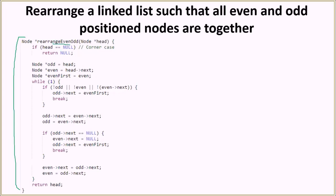Let's look at the code. The function rearrange_even_odd takes the head of the linked list as an argument. First, we check if head is null — if so, we return null. Otherwise, we initialize three variables: odd is set to head (the first node), even is set to head.next (the second node), and even_first is set to the same value as even. If there's only one element, head.next is null, so even and even_first both become null — handling that case as well.